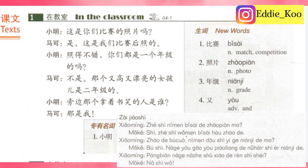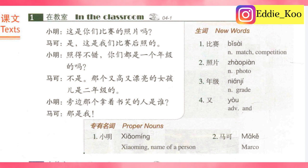Now let's go over the new words. 生词，新词，new words. 一，比赛。二，照片。三，年级。四，优。